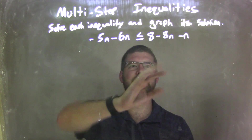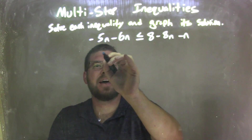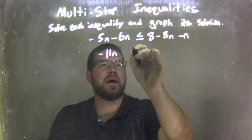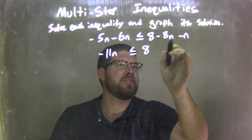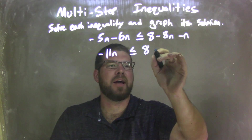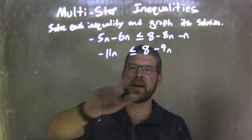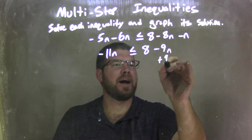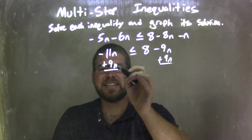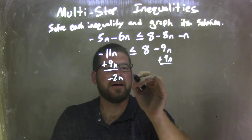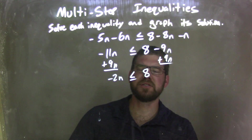First thing I want to do is combine my like terms on each side. So negative 5n minus 6n is negative 11n, and that's less than or equal to 8 minus — negative 8n minus n is negative 9n, so we have minus 9n.